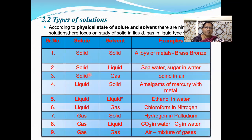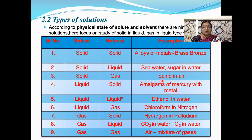Second type: solid in liquid — example is sea water or sugar in water, where sugar is the solid solute and water is the liquid solvent. Third type: solid in gas — solid is solute and gas is solvent. Example: iodine in air, where iodine is a sublimatory solid solute and air is the gaseous solvent. Fourth type: liquid in solid — example is amalgams of mercury with a metal like silver, where mercury is the liquid solute and the metal is the solid solvent.